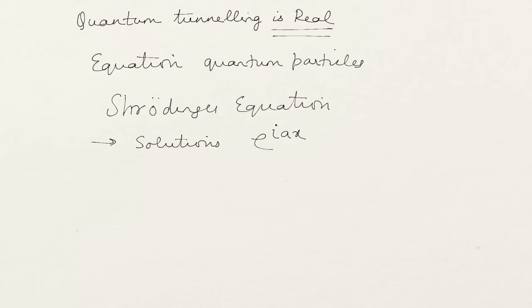Equation of quantum mechanics, of quantum particles, is given by the Schrödinger's equation. And most of the solutions of the Schrödinger's equation is a complex number. It comes in the form of e to the power of i a x.